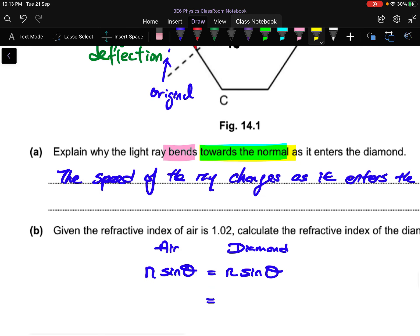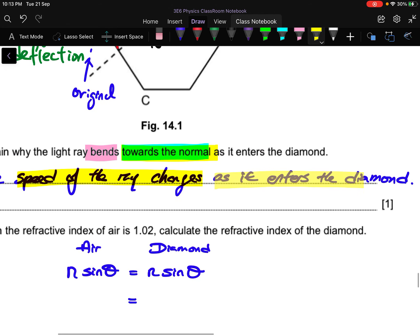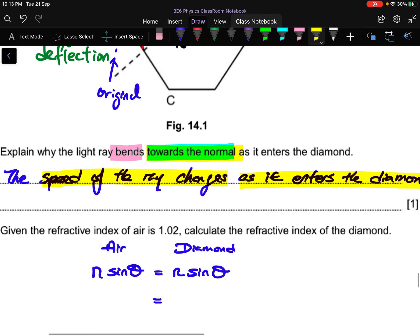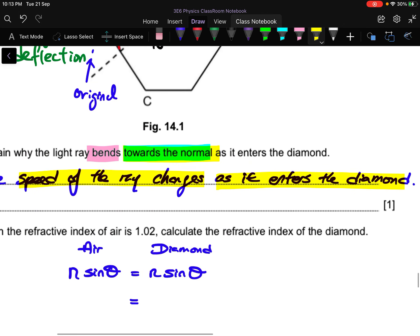So why things bend? Well, light bend because the speed of the ray changes as it enters the diamond. So by answering this yellow highlighted line, you have answered why it bend. Have you answered why is it that it turns towards the normal? No, you didn't. So what you need to do?